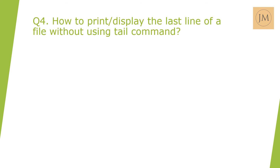Next question: How to print or display the last line of a file without using the tail command? The answer is: `sed -n '$p' file.txt`. Dollar stands for the last line of the file, and 'p' stands for print. The `-n` switch enables silent mode, which suppresses all other output, so only the last line is displayed.